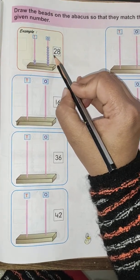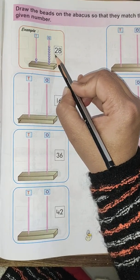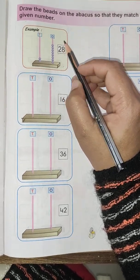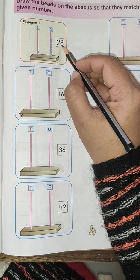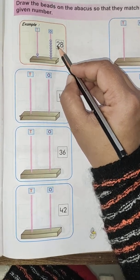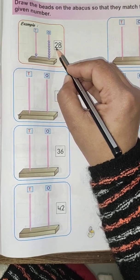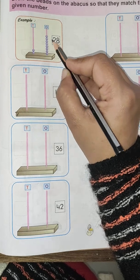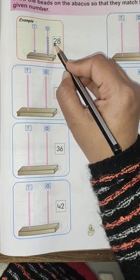Now see the number. Here number is 28. In place of ones, the number is 8, and in place of tens, the number is 2. First number is ones, second number is tens.